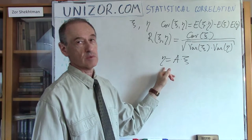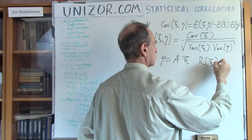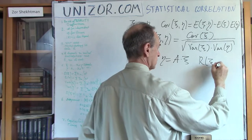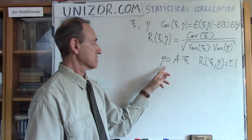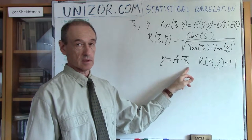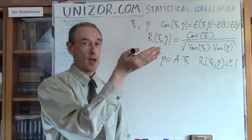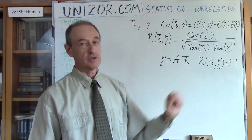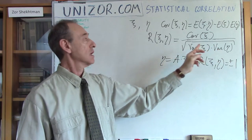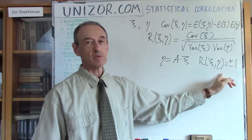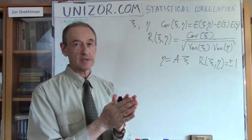This variable completely defines the other. In this case, the correlation coefficient R equals plus or minus one, depending on the sign of the constant. If the constant is positive — meaning the random variable increases when the other increases and decreases when the other decreases — the correlation is one. If A is negative, meaning they go in opposite directions, the coefficient is minus one. It can be proven that for any pair of random variables, the correlation coefficient will always be between minus one and one, with the endpoints representing ultimate dependency and zero representing independence.